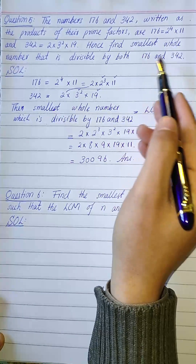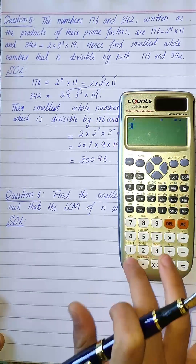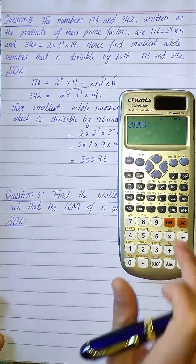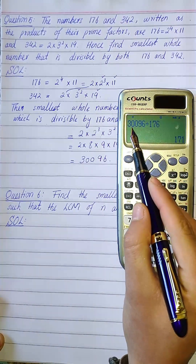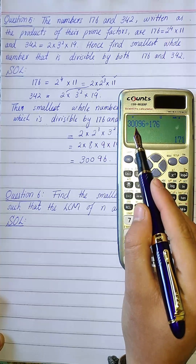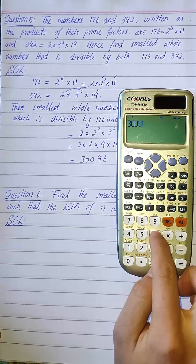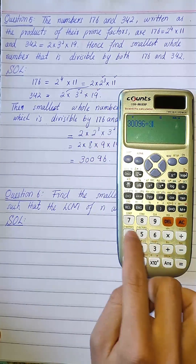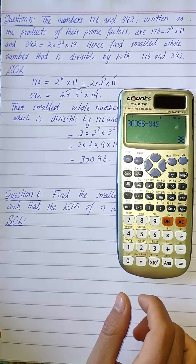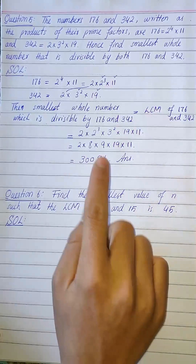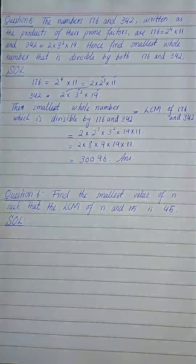We can verify: 30,096 divided by 176 — 176 can perfectly divide 30,096. Also, 30,096 divided by 342 divides perfectly, giving 88. So 30,096 is the smallest possible whole number which is divisible by both 176 and 342.